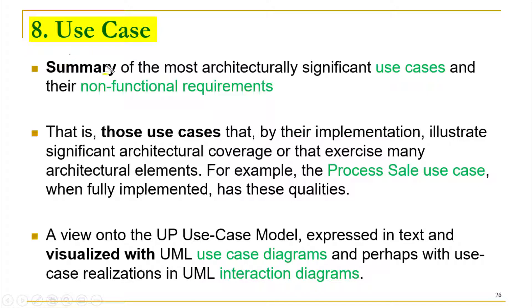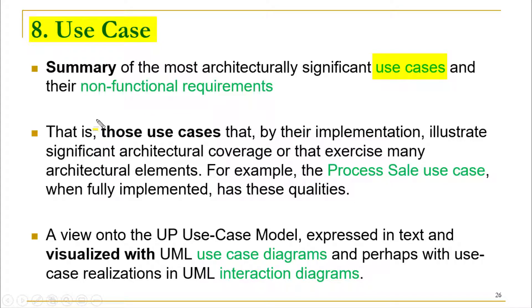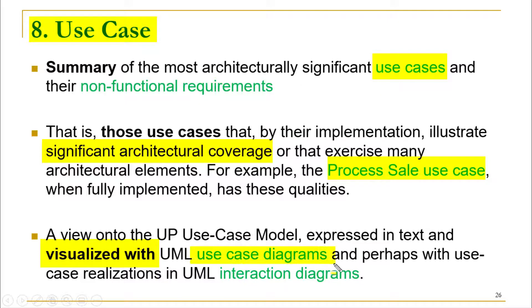The use case view represents a summary of the most architecturally significant use cases. While a full use case document exists separately, this architectural view highlights only those use cases significant in terms of non-functional requirements — specifically those whose implementation illustrates significant architectural coverage, meaning they interact with most parts of the system. For example, the 'process sale' use case is architecturally significant. Visualization uses use case diagrams and interaction diagrams.